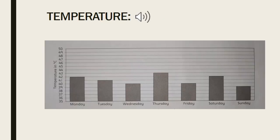Moving to our second page: temperature. Here we have given a temperature graph for Peshawar for one week in June. We have to write the temperature of each day by reading the graph. On Monday the temperature was 42 — this one is given to us. You have to look at Monday on the graph and then read the number on the left-hand side where Monday's bar ends, which is 42.